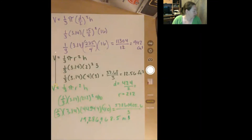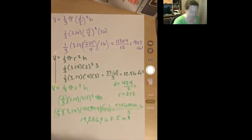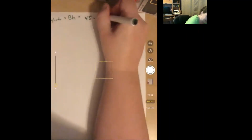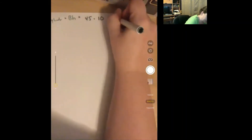Guided practice, number one: the area of the base of a cylinder is 45 square inches and the height is 10 inches. The cone has the same base area and height. What is the volume of the cone? The volume of the cylinder equals base times height: 45 times 10 is 450.